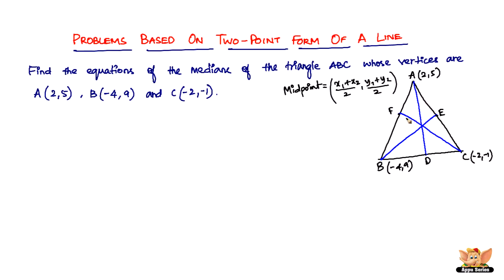I'm leaving the finding of the midpoints to you, because it's just simple mathematics. After finding the midpoints, what you get is: the midpoint of BC is (−3, 4), the midpoint of AC is (0, 2), and the midpoint of AB is (−1, 7). Now you've got the midpoints, and you have the two points required to find the equation of each median.